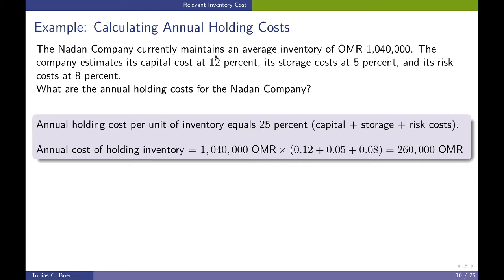Be careful when you read something like this — 12%, 5% — these are, in this example and generally, on an annual basis. But maybe you only hold these items for a couple of weeks in your inventory. The annual costs would be 260,000 Omani Real, but if the holding period is less than a full year, then the actual holding costs also go down.